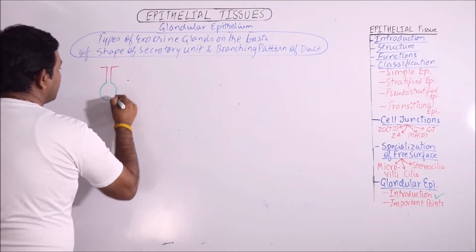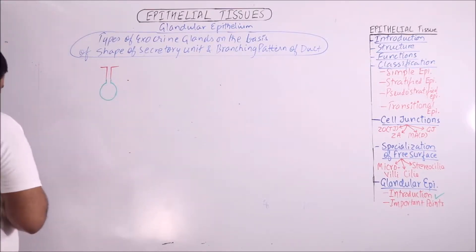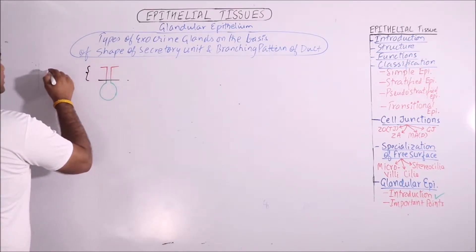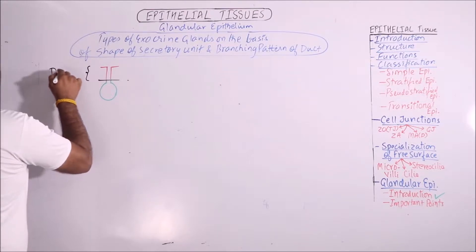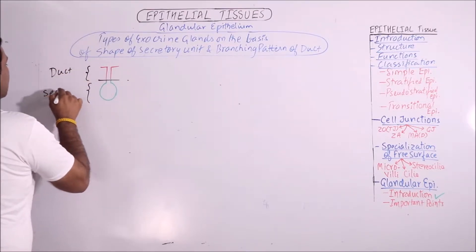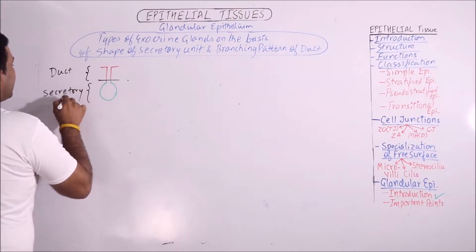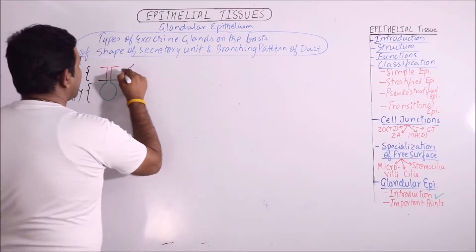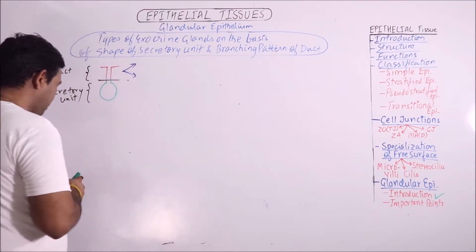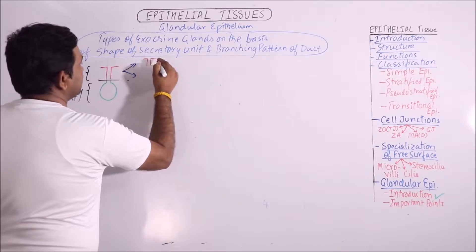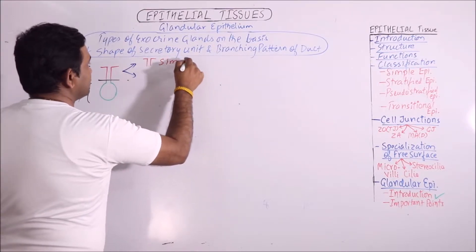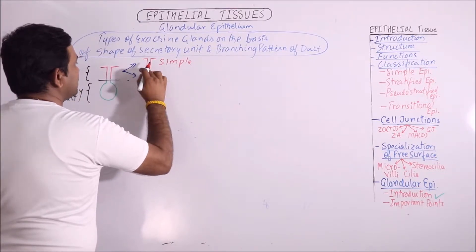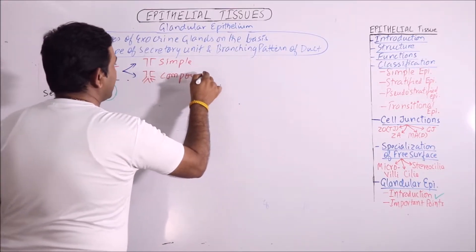We should know what terminologies are used for classification of glands. This is basically the duct system and this is the secretory unit of the gland. Duct systems in glands are of two types: the first one is simple, and if branching is present in the duct system, it is said to be compound type.